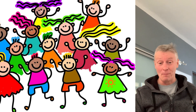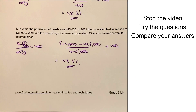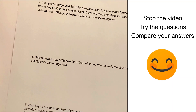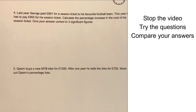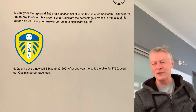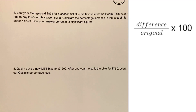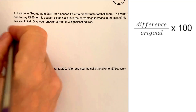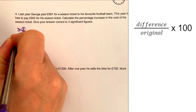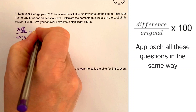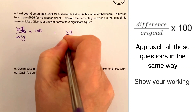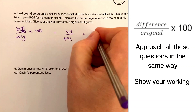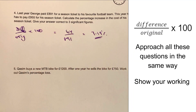Question number four: last year George paid £891 for a season ticket to his favourite football team. This year he has to pay more. Not so difficult — difference over original multiplied by 100. The difference between 891 and 955 is going to be 64, and the original was 891. Put that in your calculator: 7.19% to three significant figures.